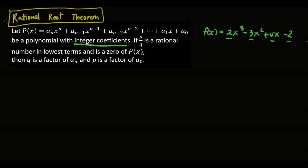The second requirement is that P over Q, your fraction, must be in lowest terms. For instance, 4 over 3 is in lowest terms. The numerator and denominator must be relatively prime — meaning they have no common factor other than 1.